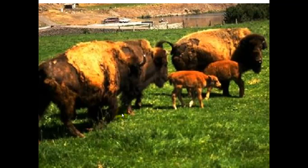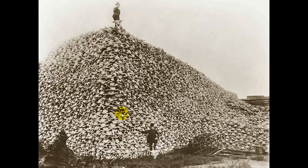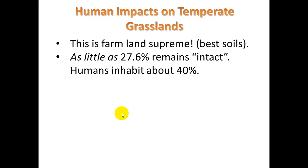We find a pretty wide range of fauna. There's a striking picture of buffalo skulls showing just how the buffaloes were in our history. Human impacts: this is farmland supreme — the best soils. Unfortunately, as little as 27.6% remain intact and humans inhabit about 40%. This area is the bread basket of America, so these are soils that we need to do our best to maintain the fertility of.